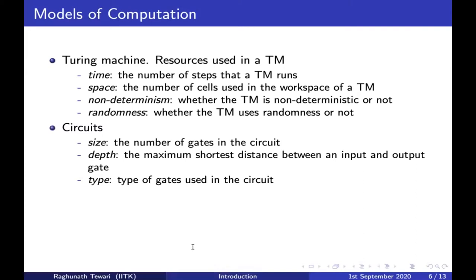Another model of computation we will discuss is circuits. A Turing machine is more like how an algorithm is run — a simulation of a computer. A circuit is slightly different: it has gates such as AND gates, OR gates, NOT gates, and input gates. Input gates can be constants like zero or one, or variables x1, x2 that can take boolean values in boolean circuits.